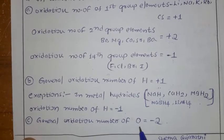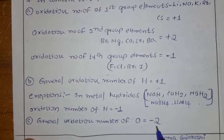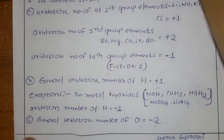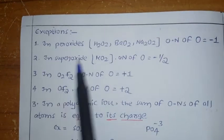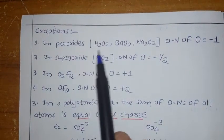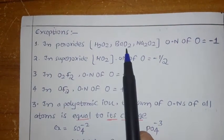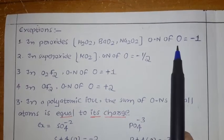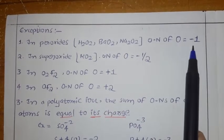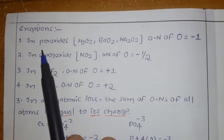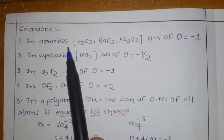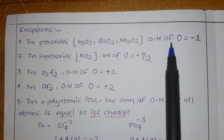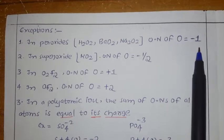The general oxidation number of oxygen is minus 2. But there are exception cases. In peroxides — hydrogen peroxide H2O2, barium peroxide, and sodium peroxide — the oxidation number of oxygen is minus 1. So the general oxidation state of oxygen is minus 2, but in peroxides, the oxidation state is minus 1.